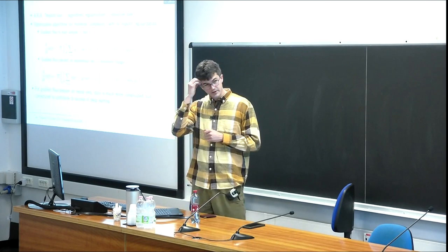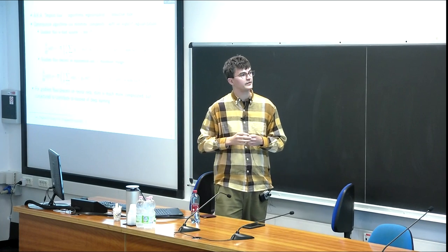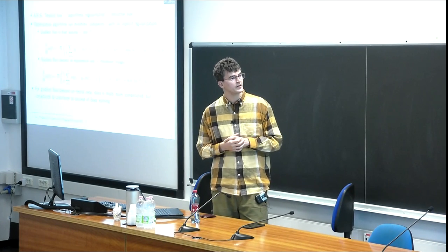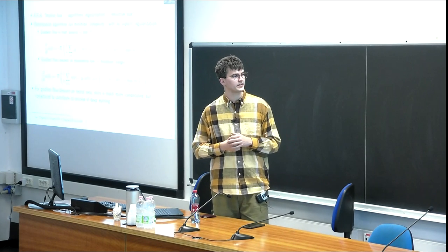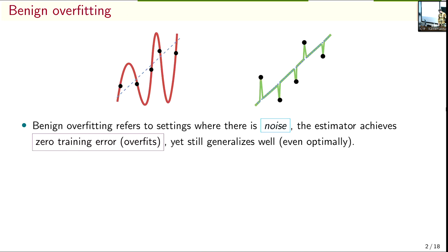Something we'll talk about later is an analog to this story in gradient flow and descent on neural networks, where the story is necessarily more complicated because optimization is non-convex. But it really seems to be key to the success of deep learning, or at least that's what I think. That's going to be the first part of the talk.